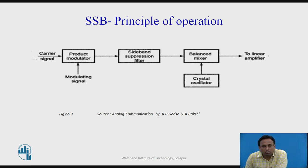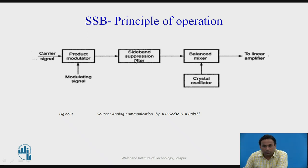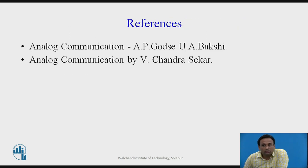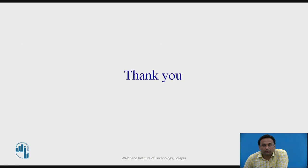To generate an SSB signal, a balance modulator is used first to produce LSB and USB, and then a filter method is used to suppress one sideband. The phase shift method and third method can be discussed in later sessions. References for this lecture include Analog Communications by A.P. Godse and U.A. Bakshi, and Analog Communication by V.H. Chandra. Thank you.